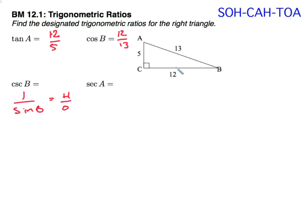So for angle B, the opposite side is 5. The hypotenuse is 13. So the cosecant of B will be 13 over 5.